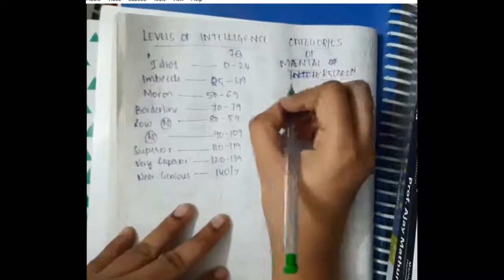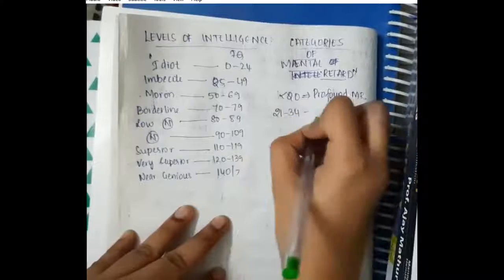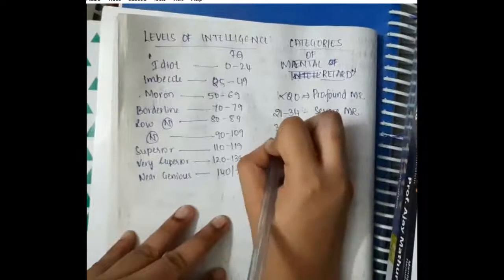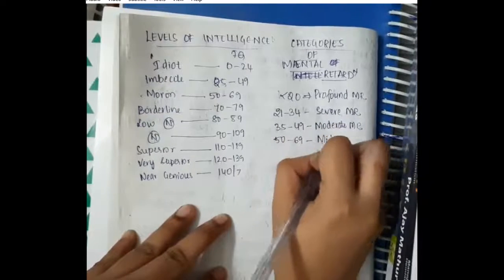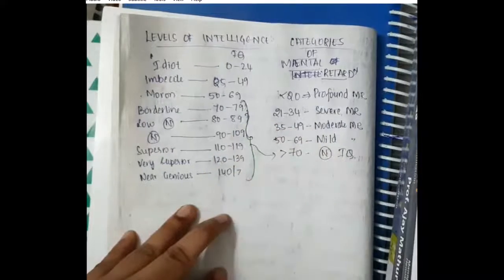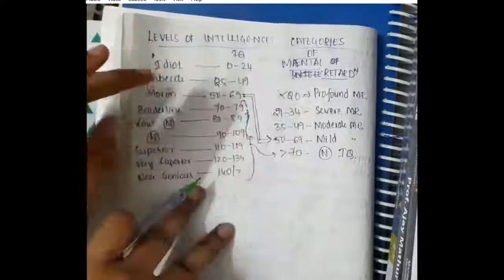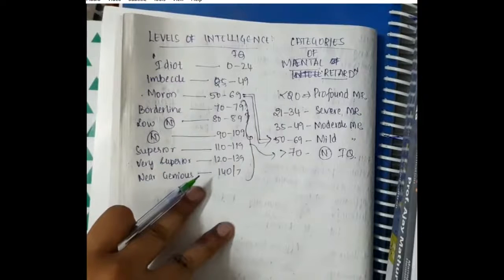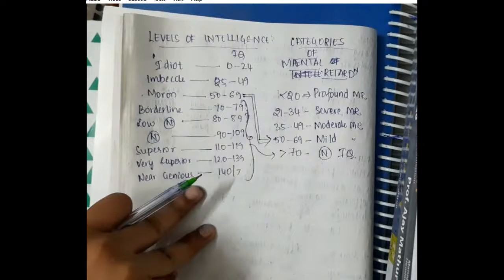Categories of mental retardation: less than 20 is profound mental retardation, 21 to 34 is severe mental retardation, 35 to 49 is moderate mental retardation, 50 to 69 is mild mental retardation. More than 70 is normal IQ. These levels of intelligence classification are very important, and many questions have been asked based on these. Thank you for watching.